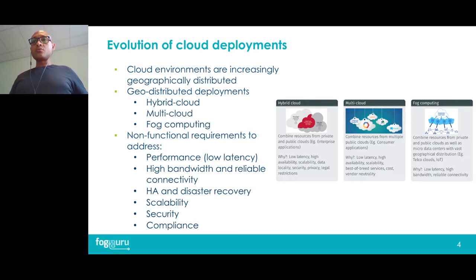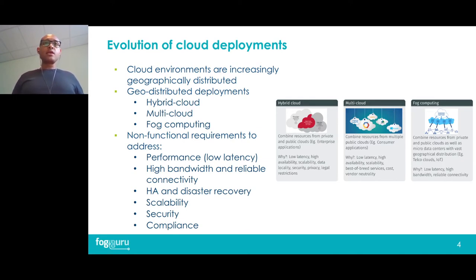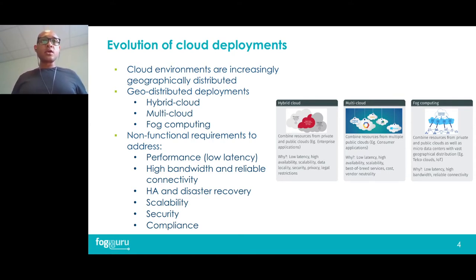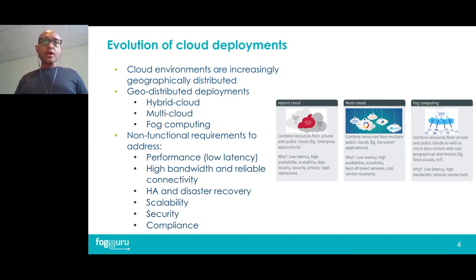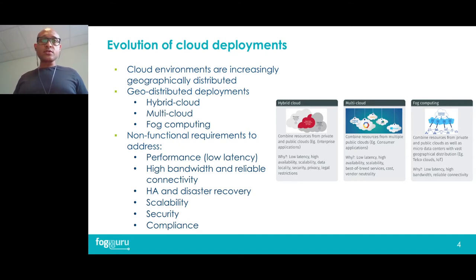The idea in fog computing is to deploy applications on resources that are close to end users and user traffic. This evolution is driven mainly by the growing requirements of modern applications. For example, many applications require very low latency, so they need to be deployed on data centers where most end users are located. Applications such as IoT and video analytics require high bandwidth and reliable connectivity to upload vast amounts of data to the computing environment.